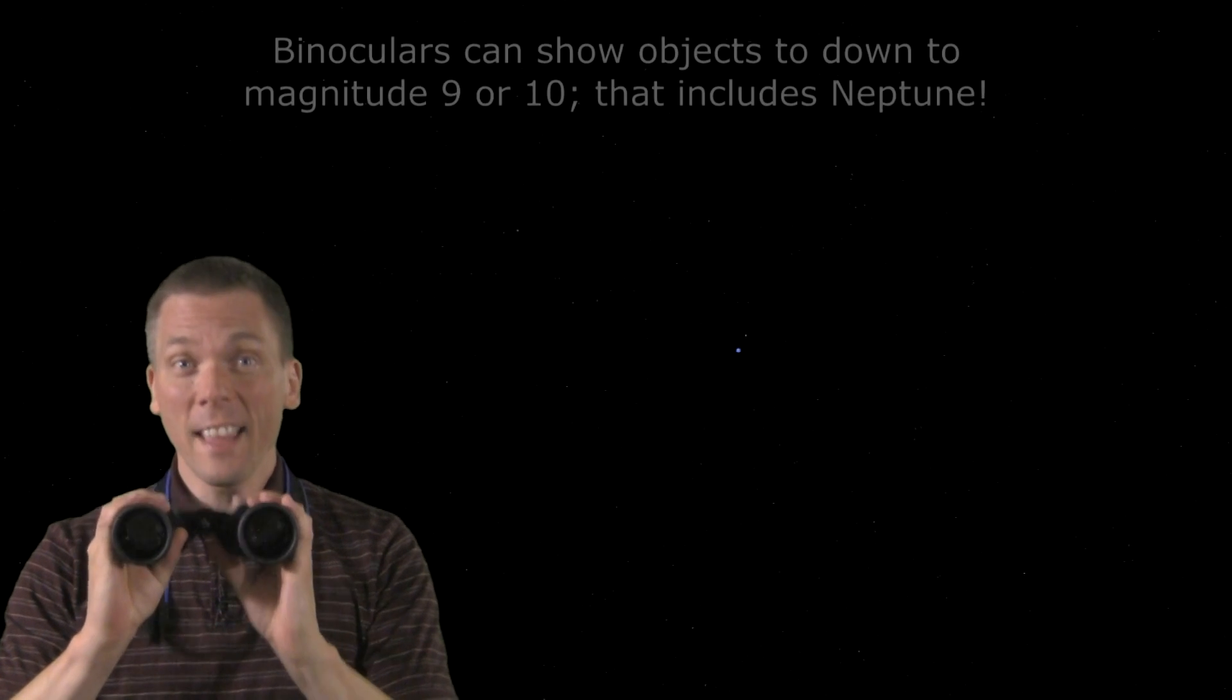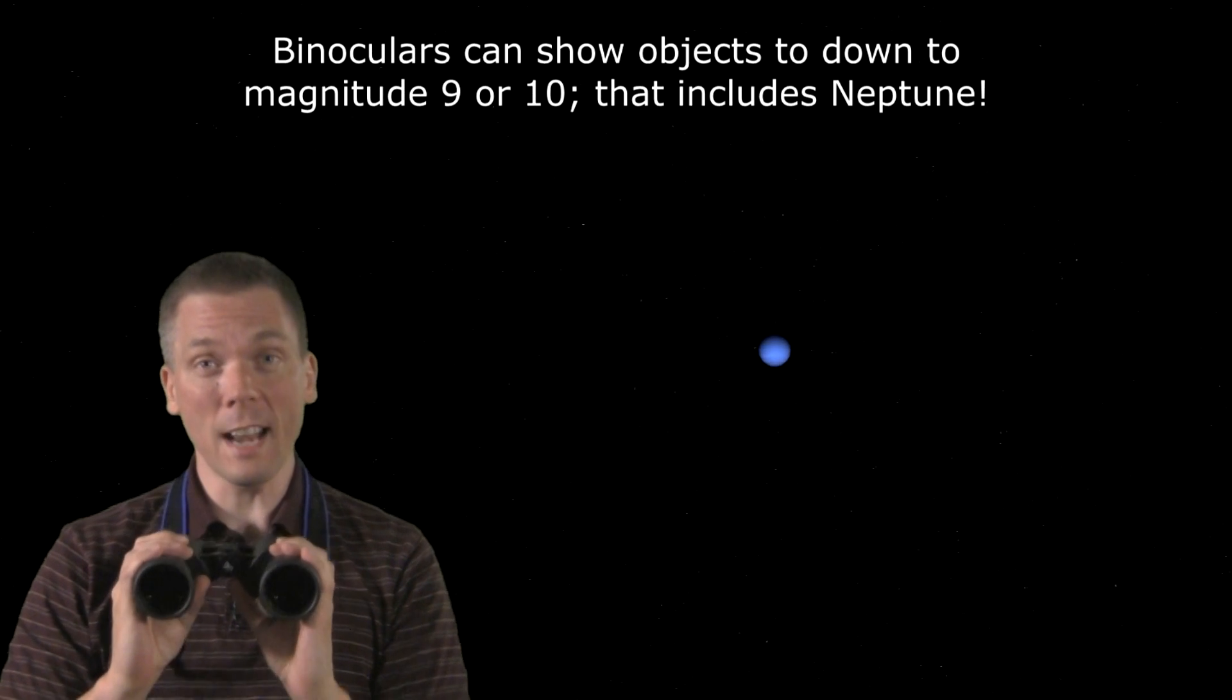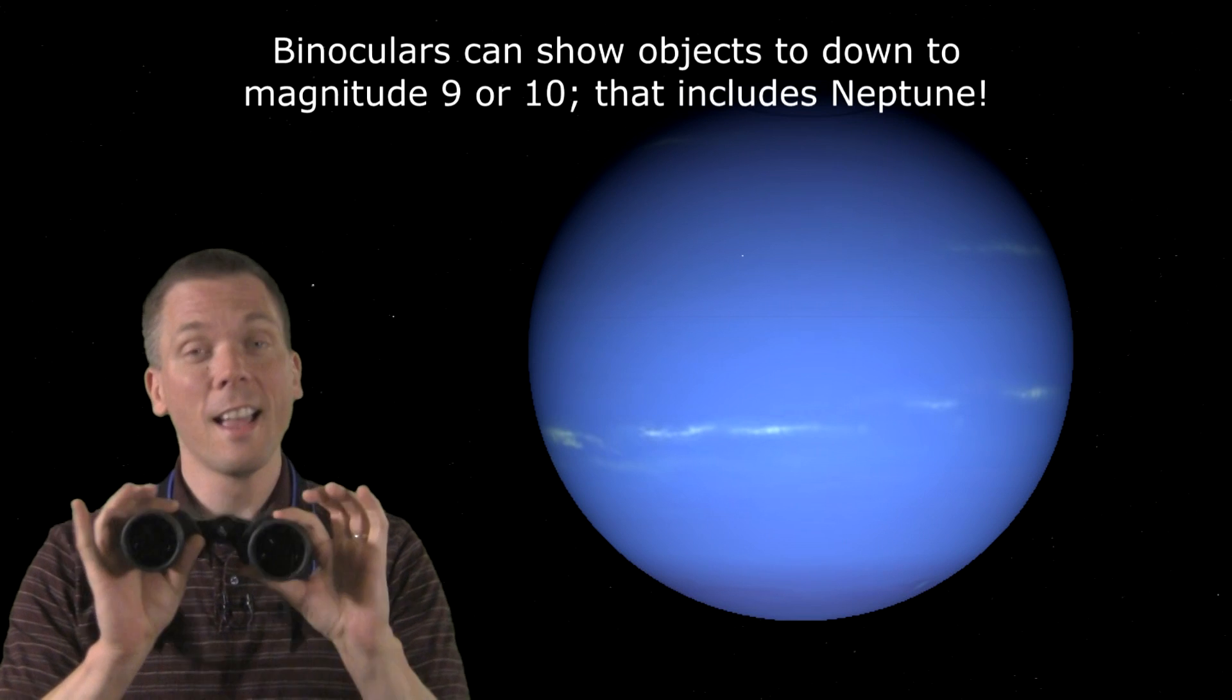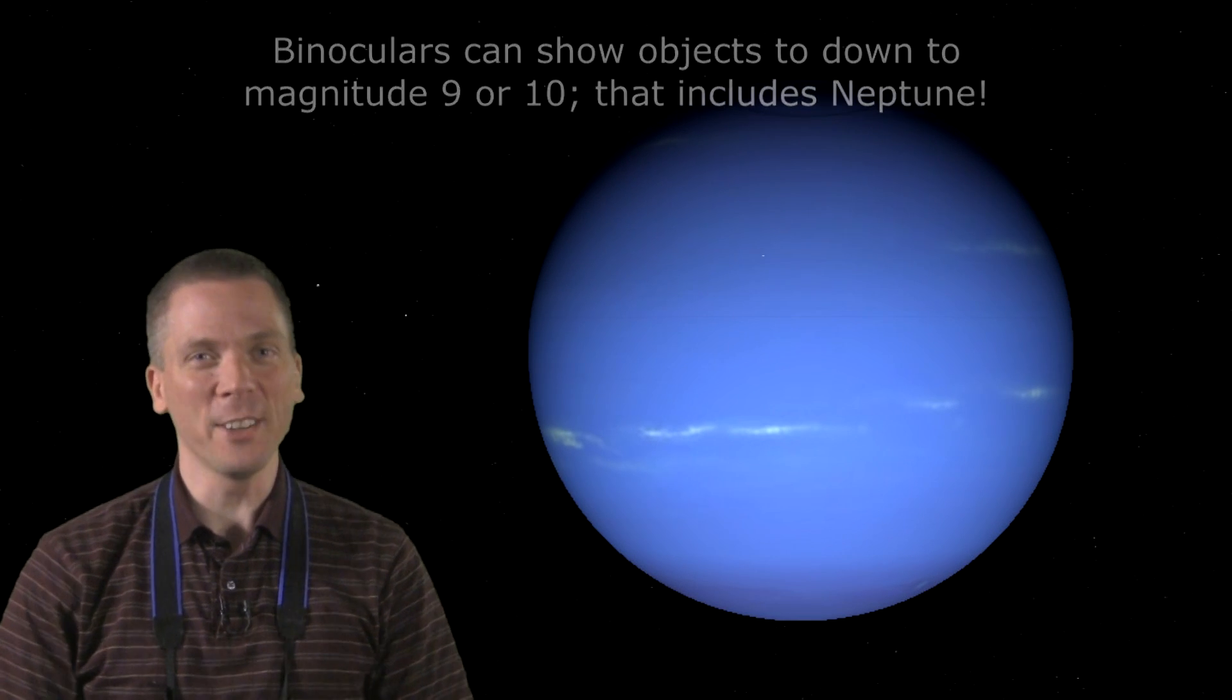Do you know that you can see Neptune, the furthest planet in our solar system, sorry Pluto, with just a pair of these? That's right, you can see the 7.8 magnitude gas giant with only binoculars, and I'll show you exactly how to do it, too.